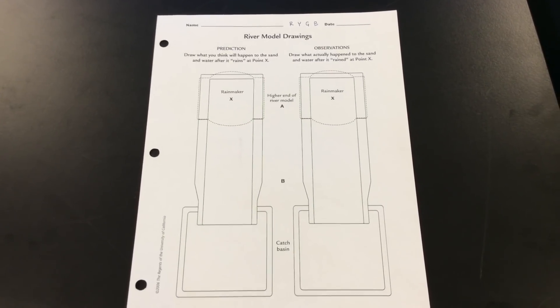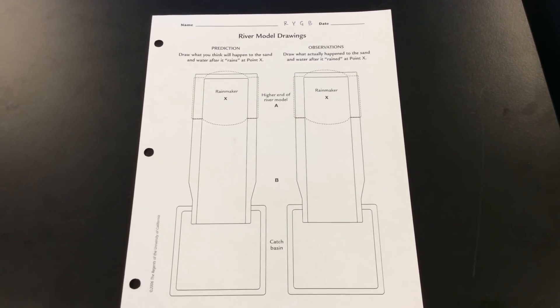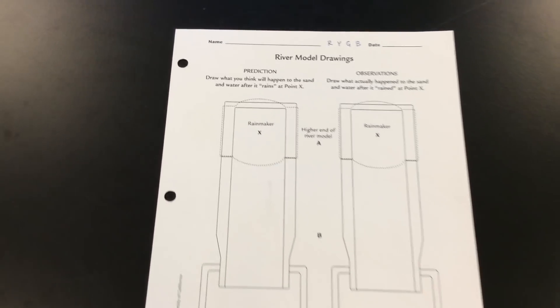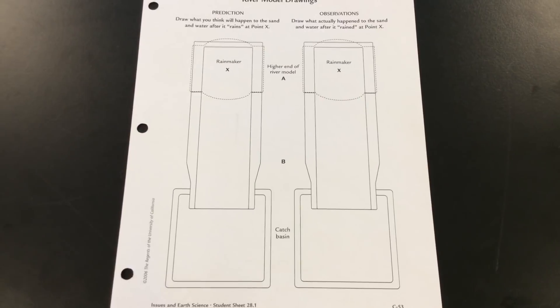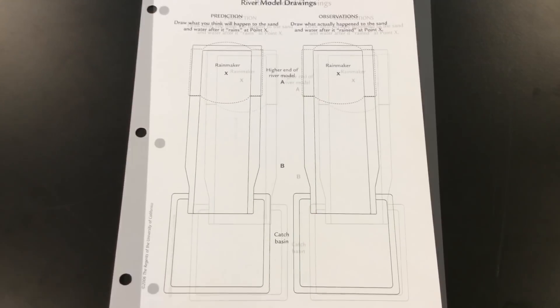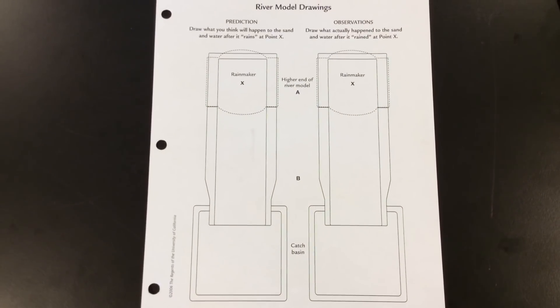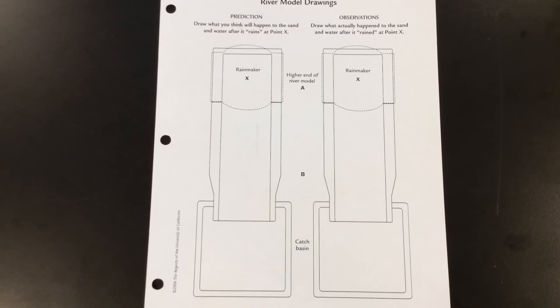So once you're set up before you can start the experiment, on your lab sheet on the side that says prediction, you're going to have to make a drawing to predict what's going to happen to your river as you make it rain. You want to show how you think the sand will move and where it will end up.